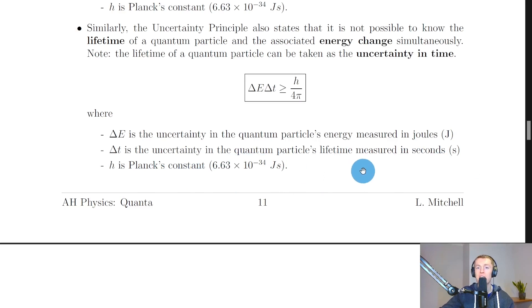And again, you could be asked to calculate the minimum uncertainty in the energy or the minimum uncertainty in the time. And just as before, if that was the case, you would take this to be equals h over 4 pi if you were looking for a minimum value.